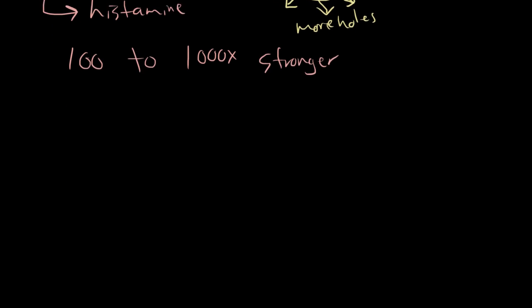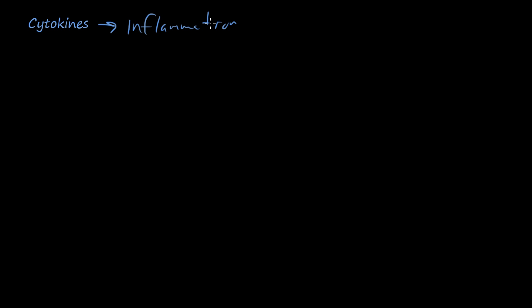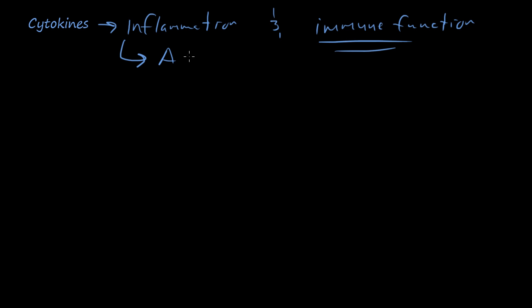Now we're going to talk about a different cell-derived chemical mediator of inflammation: cytokines. Cytokines are involved in both inflammation and immune function. We're going to focus on the inflammation part. Cytokines are involved in acute inflammation — which spans minutes to hours to days — and also in chronic inflammation, which spans weeks, months, or years. Cytokines represent a broad classification of chemicals involved in both the inflammation response and immune function.